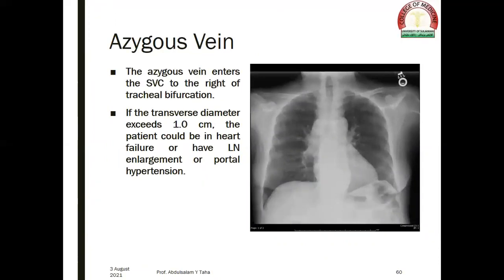The azygous vein enters the SVC to the right of the tracheal bifurcation. If the transverse diameter of the azygous vein exceeds one centimeter, the patient could be in heart failure or have lymph node enlargement or portal hypertension. This x-ray belongs to a patient with portal hypertension and an enlarged azygous vein shadow.